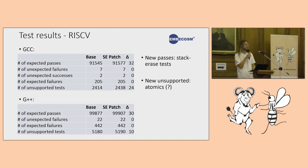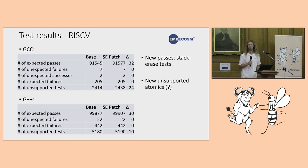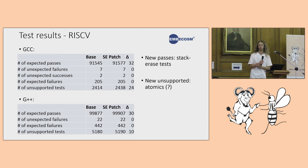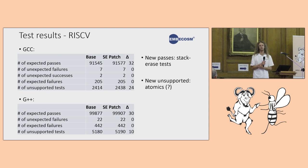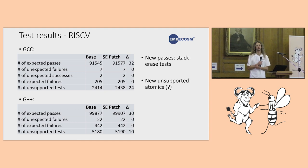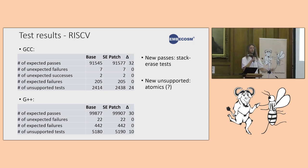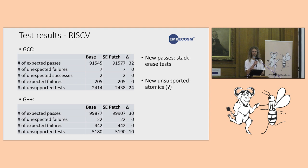An audience member noted a limitation: with stack arrays on every function, checking that the stack is zeroed at the very end doesn't verify what's happening at intermediate calls — the intermediate frames may or may not have been properly erased. The test only shows the final state. This is an acknowledged limitation of the current testing approach.